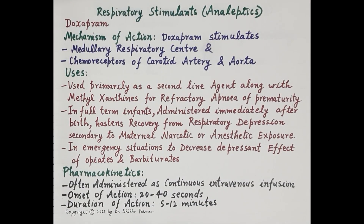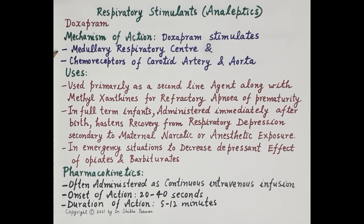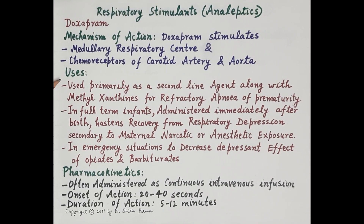Now let's discuss the pharmacology of the key respiratory stimulant: doxapram. Regarding its mechanism of action, doxapram acts both centrally and peripherally. Centrally, doxapram stimulates the medullary respiratory center located in the medulla oblongata of the brain stem. Peripherally, it stimulates chemoreceptors located in the carotid artery and aorta. This improves both the rate and the depth of ventilation.